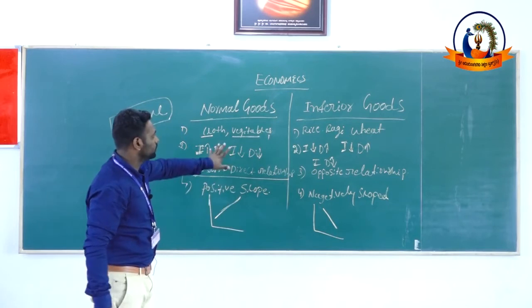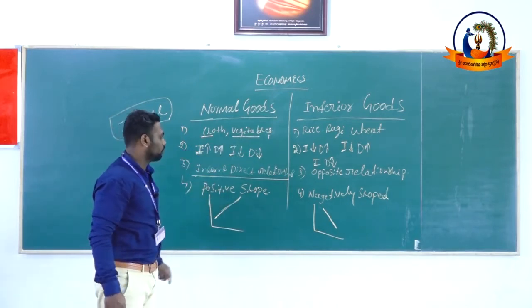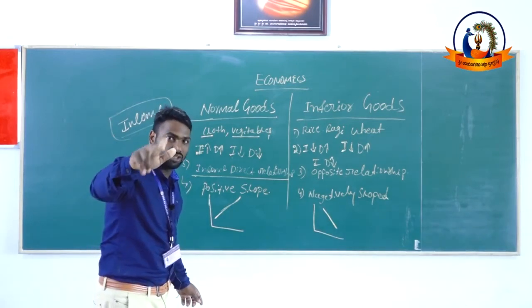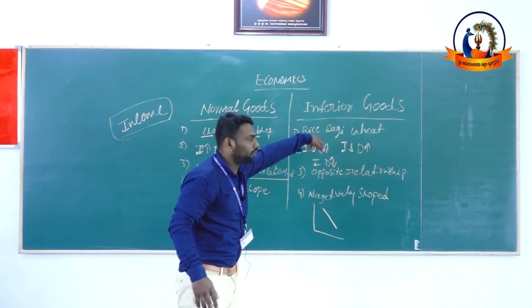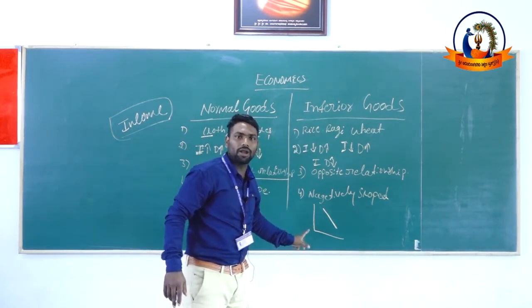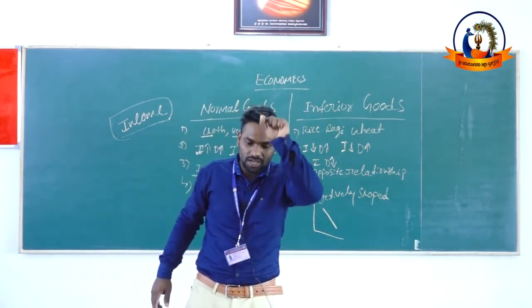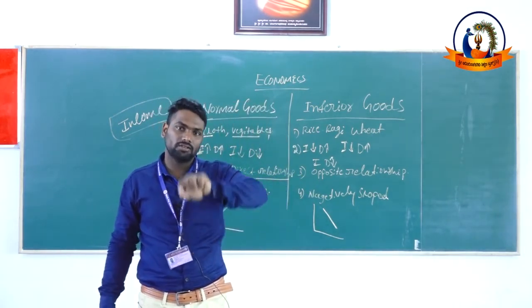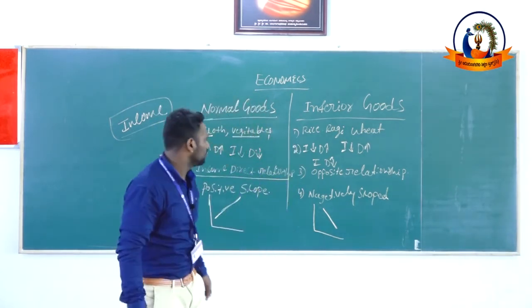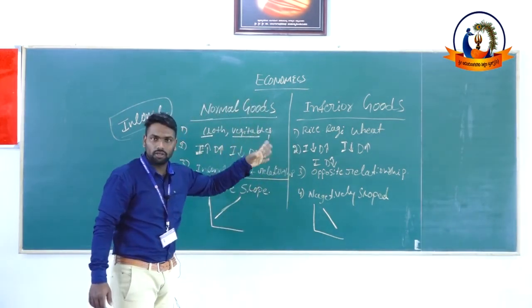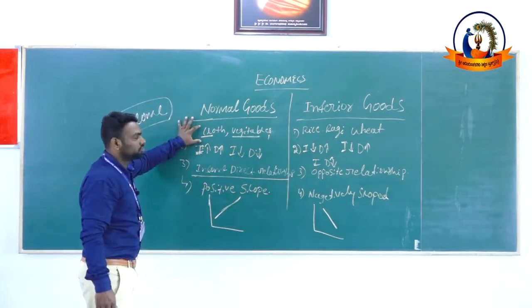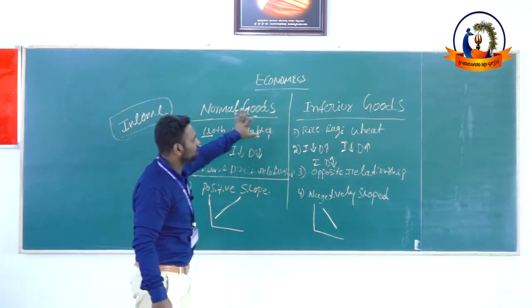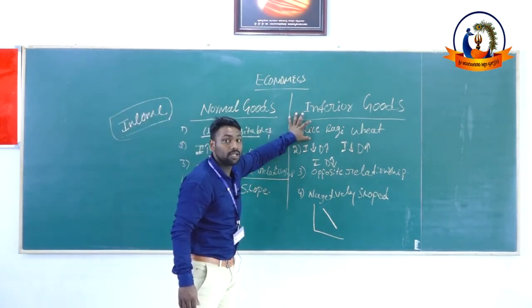This is the difference between inferior goods and normal goods. Why is the normal goods demand curve positively sloped? Because when consumer income increases, demand increases. Why is the inferior goods demand curve always negatively sloped? Because when consumer income decreases, demand increases. Normal goods have a direct relationship between income and demand; inferior goods have an inverse relationship.